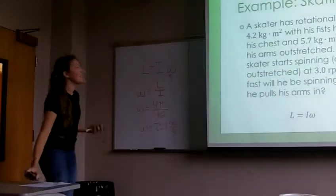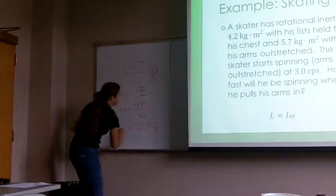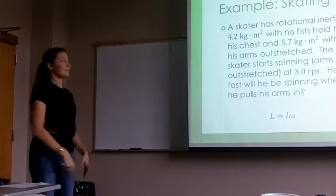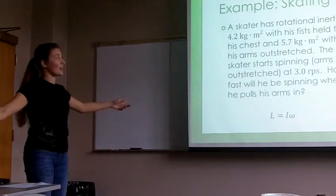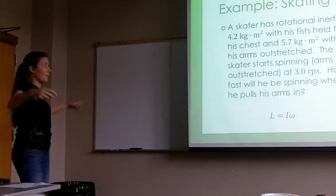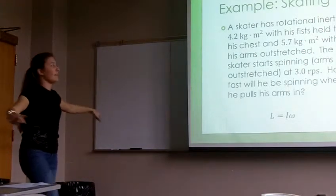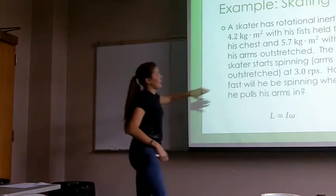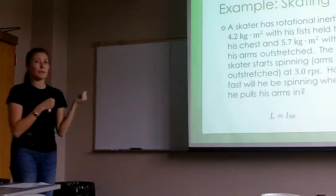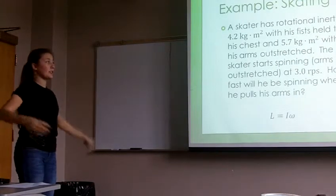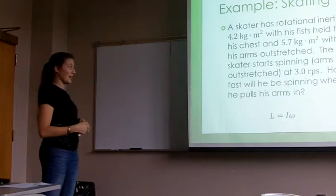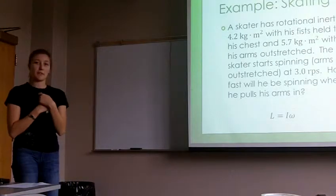An example of this is figure skating. To turn when you're figure skating, you start out nice and wide like that top picture, and then you pull everything in. When the skater has their arms out, they have an inertia of 5.7 kilograms meters squared. When he has his arms in, it's 4.2 kilograms meters squared. The skater starts spinning with his arms out at three rotations per second. How fast will he be spinning when he pulls his arms in?